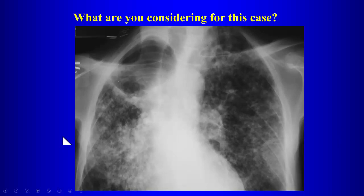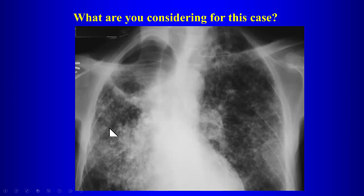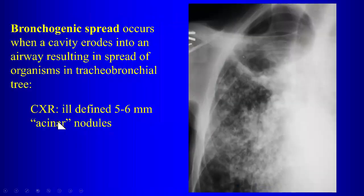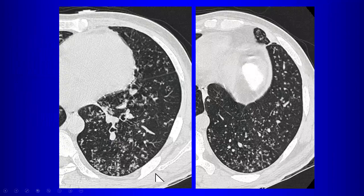With a cavitary lesion, the organism has access to the airways, so you get bronchogenic dissemination, which gives you these larger nodules. There's a specific term for nodules from bronchogenic dissemination: they are called acinar nodules — ill-defined, larger than miliary nodules, from bronchogenic spread of disease.